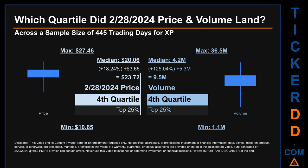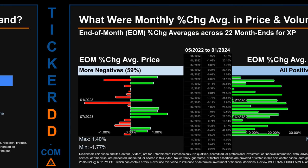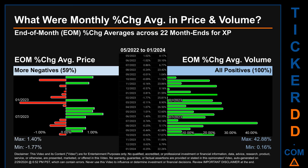Therefore, February 28, 2024 price was higher from that middle marker by 18.24%. The day's volume of 9.5 million was more than the median by 125.04%. Hello, my name is John. What were end-of-month percentage change averages in price and volume for XP? The monthly average of percentage change in price and volume were calculated for each of the 22 month ends. That calculation took daily percentage changes and averaged them for each given month. If a month end came out negative, it means that the month summarily saw a negative change.